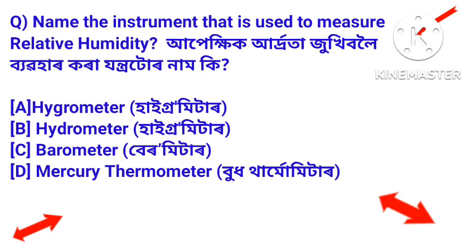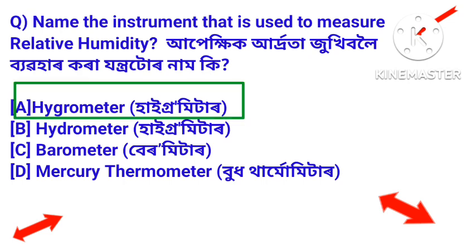Next question: name the instrument used to measure relative humidity. Apekkik adota zukhi boloi bryvohar korra jantotur nama ki? Answer: hygrometer. Apekkik adota zukhi boloi hygrometer namor jantotur bryvohar korra hoi.